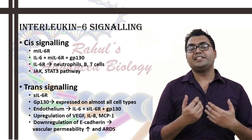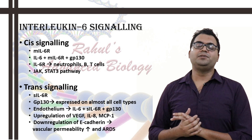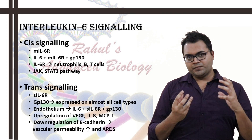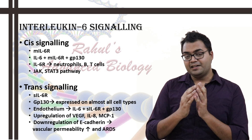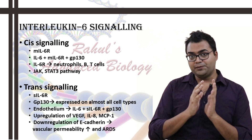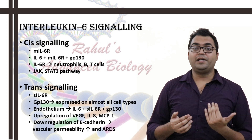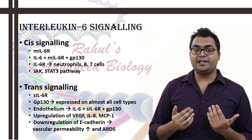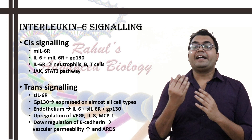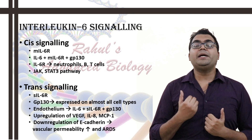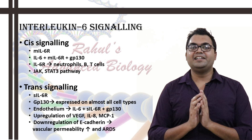Since glycoprotein-130 is expressed on all types of cells, for example if we take the vascular endothelium or endothelial cells present in the tunica intima of the arteries, it could wreak havoc. GP-130 would get dimerized, and the soluble IL-6 and soluble IL-6-R combination with GP-130 would then cause VEGF (vascular endothelial growth factor) to be upregulated, IL-6 to be upregulated, macrophage chemotactic protein MCP to be upregulated, and MIP-1-alpha to be upregulated. It would also downregulate endothelial E-cadherin. All this leads to an increase in vascular permeability, which is one of the hallmarks of acute respiratory distress syndrome perpetuated by SARS-CoV-2, which then leads to lung failure.